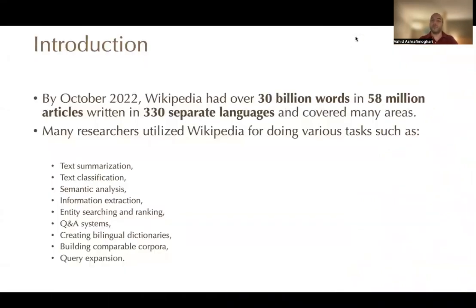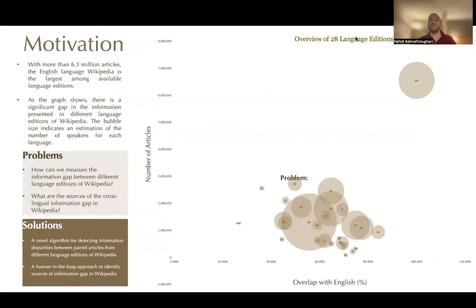By October 2022, Wikipedia had over 30 billion words in 58 million articles written in 330 separate languages and covered many areas. Many researchers utilize Wikipedia for various tasks such as text summarization, text classification, semantic analysis, information extraction, and likewise. With more than 6.3 million articles, the English-language Wikipedia is the largest among the available language editions, but there is a huge gap between the language editions of Wikipedia.